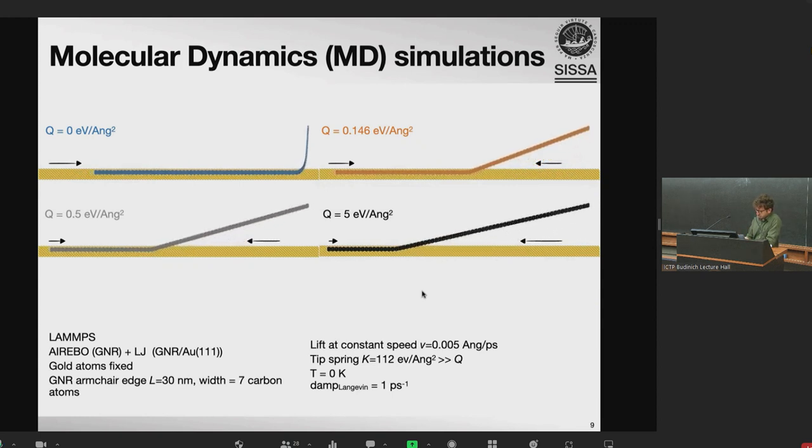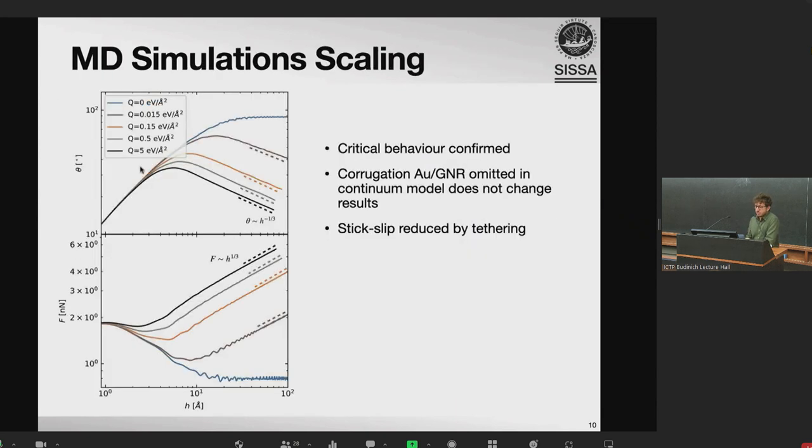So from this simulation, we can extract the same quantities that our model predicted. And we see that the bending angle and the peeling force as a function of the peeling height do scale exactly like it is predicted by the model as this fractional exponent of the peeling height. So the critical behavior is confirmed by the simulation. And since here we reintroduce the corrugation between the gold and the nanoribbon, we see that this corrugation does not destroy the observed behavior. And the stick slip, we can observe here by comparing the blue curve and the others. The stick slip is, of course, reduced in the tether regime because now the ribbon is under tension, so it can deform less, so the whole peeling proceeds more smoothly.